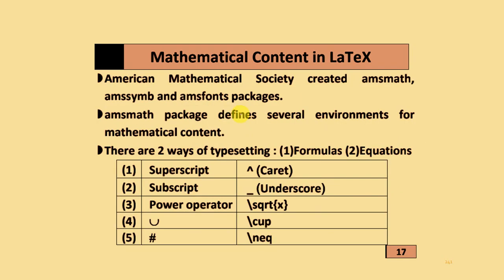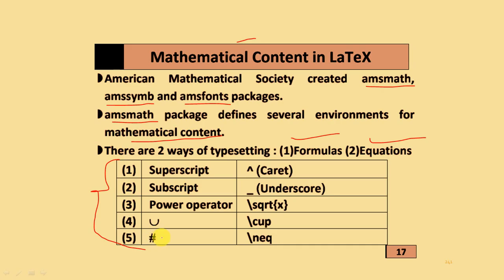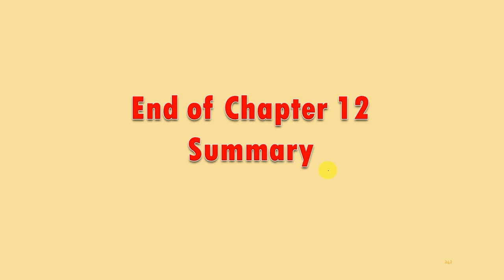Regarding mathematics in LaTeX: the American Mathematical Society created the AMS math, AMS symbols, and AMS fonts packages. The AMS math package defines several environments for mathematical content. There are two ways of typesetting: first using formulas, and second using equations. Some examples of typesetting are provided. This is the end of Chapter 12 summary.